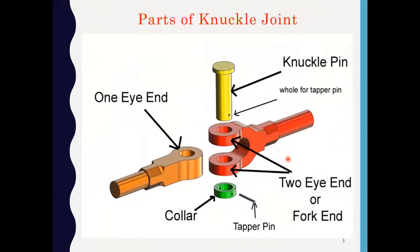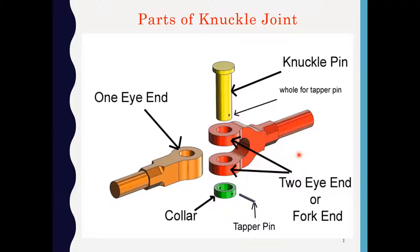These are the various parts of the knuckle joint. This is called as a single eye. This is called as a double eye or fork. This is the knuckle pin, this is the collar, and this is the taper pin. There is a hole in the knuckle pin as well as holes in the collar. To avoid the dropping of the knuckle pin, the holes of the collar and the knuckle pin are aligned and the taper pin is inserted to avoid the dropping of the knuckle pin during operation.